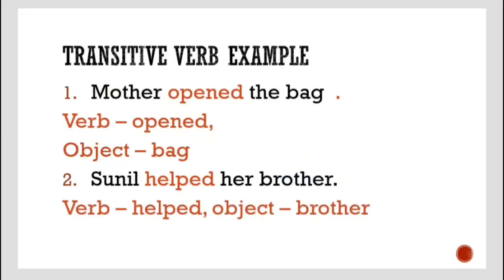Examples of transitive verbs: Mother opened the bag — opened is the verb, and bag is the object. Sunil helped her brother — help is the verb, and brother is the object. He was helping his brother, so these are transitive verbs.